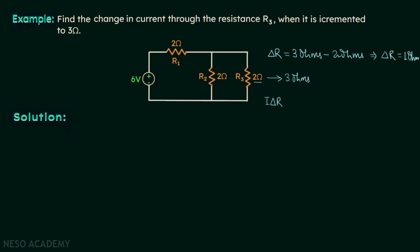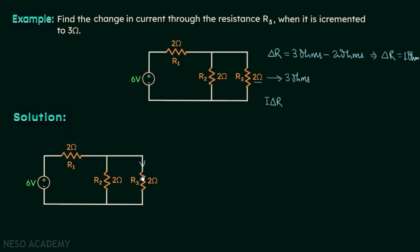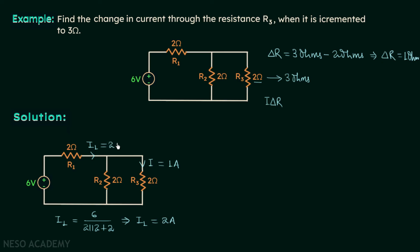Current I is the current through R3 before it is incremented to 3 ohms. To find I, we can use the current divider rule once we have the total current I1. Current I1 equals 6 volts divided by the quantity (2 and 2 in parallel) plus 2, since 2 ohms is in series with the parallel combination. Simplifying gives I1 equal to 2 amperes. Without even applying the current divider formula, we can say current I equals 1 ampere, because I1 of 2 amperes divides equally into the two branches since they have the same resistance. So now we can compute I·delta R.